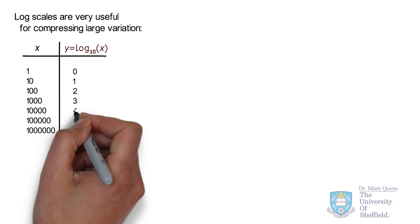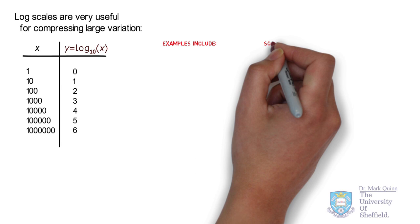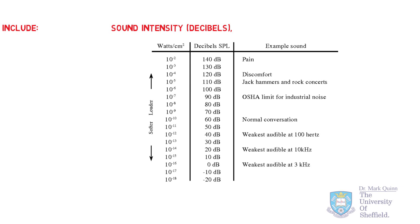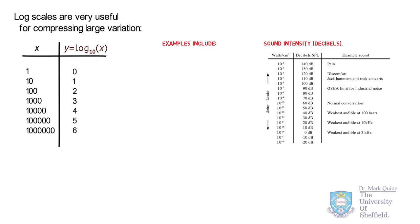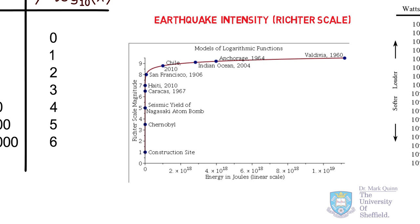There are many famous applications of log scales. This includes the decibel or sound intensity scale. Sound intensity — the power per area carried by a sound wave — can vary over almost 20 orders of magnitude. The decibel scale compresses this to 2 orders of magnitude. Another famous application is the Richter scale, which converts seismic energy released to a log scale, compressing over 20 orders of magnitude in energy to one order of magnitude on the Richter scale.